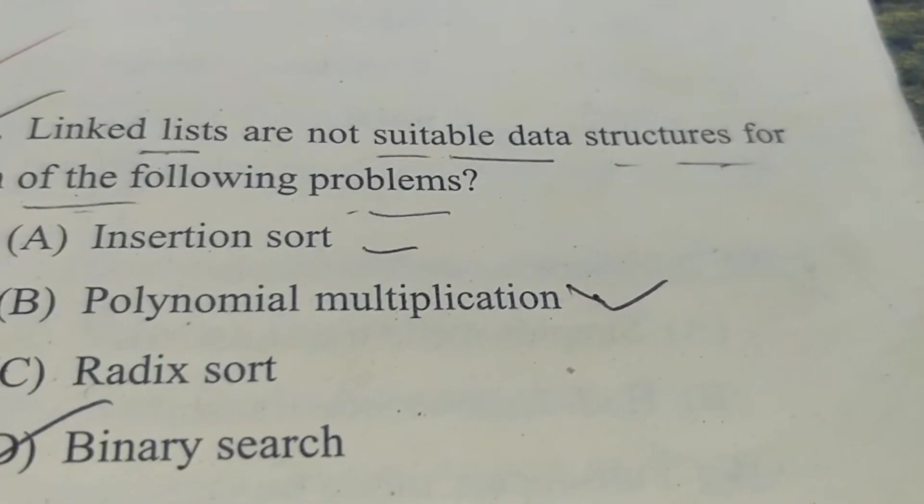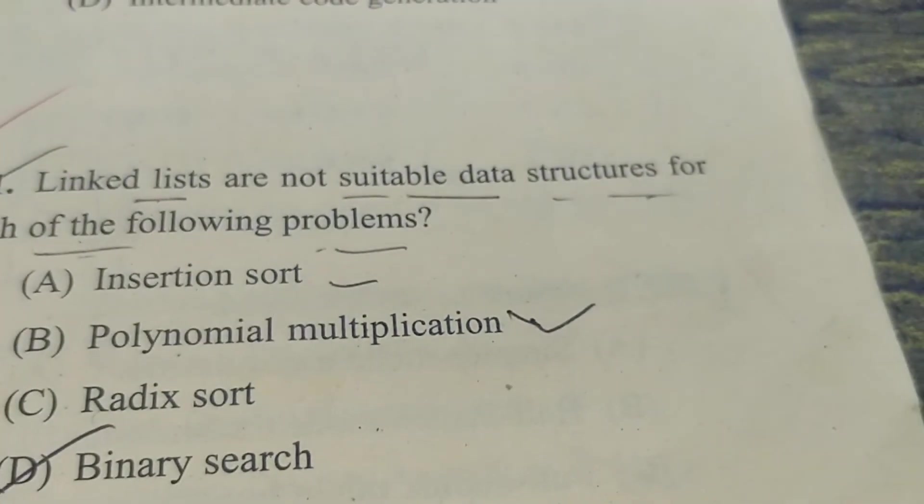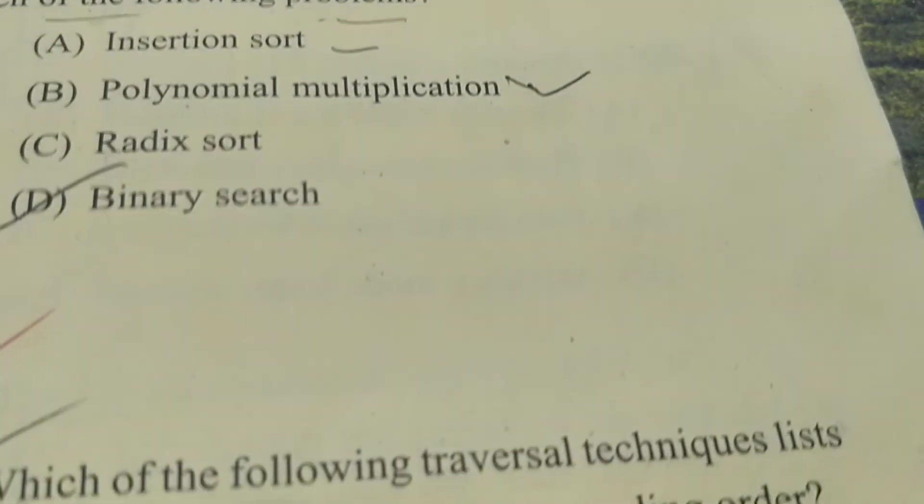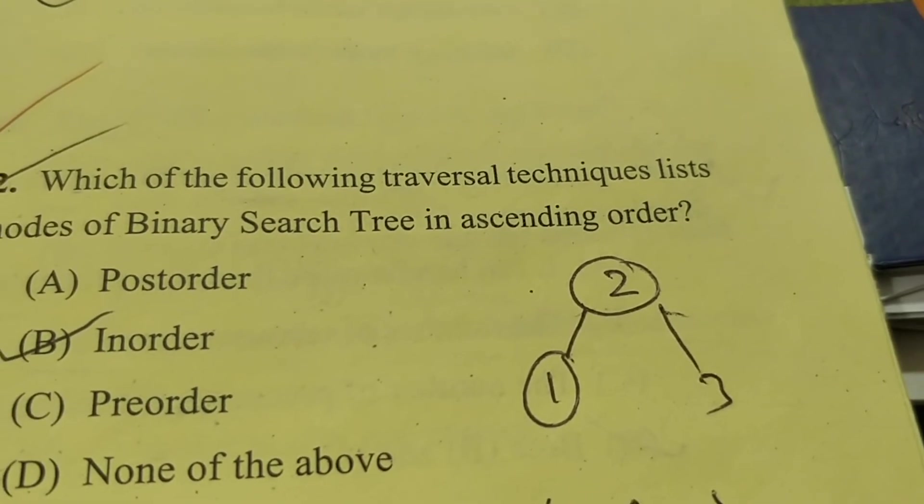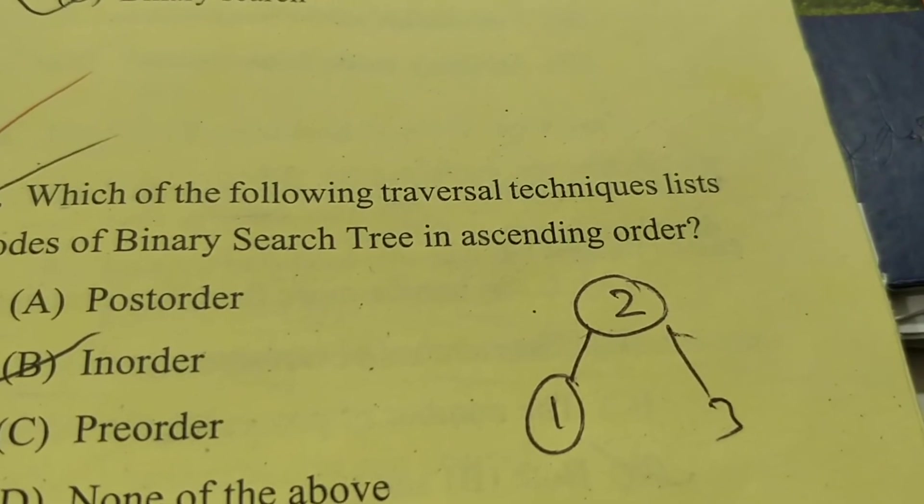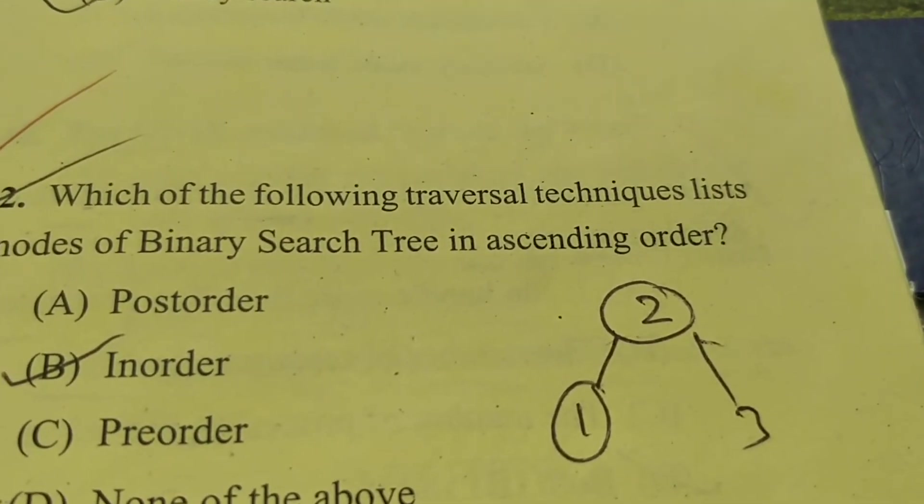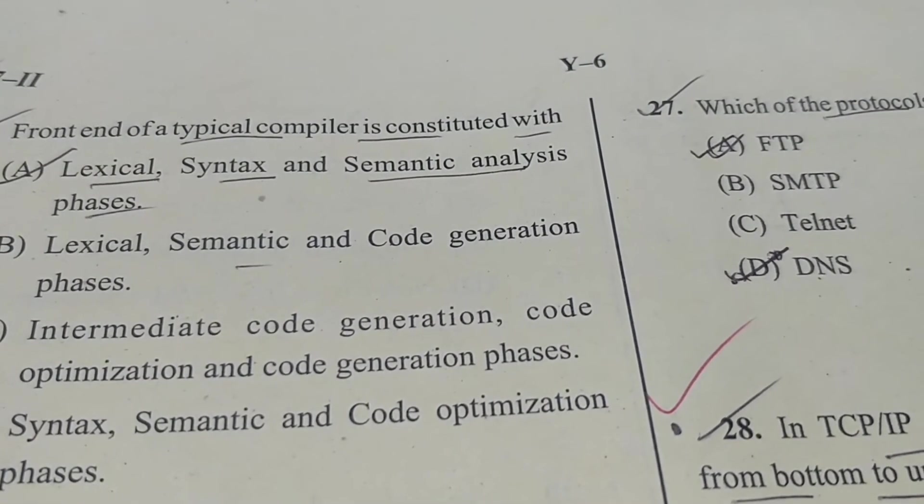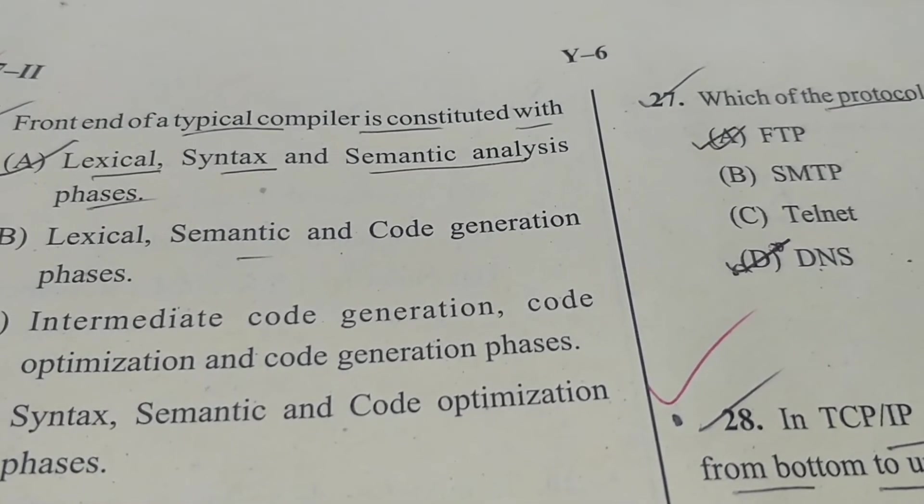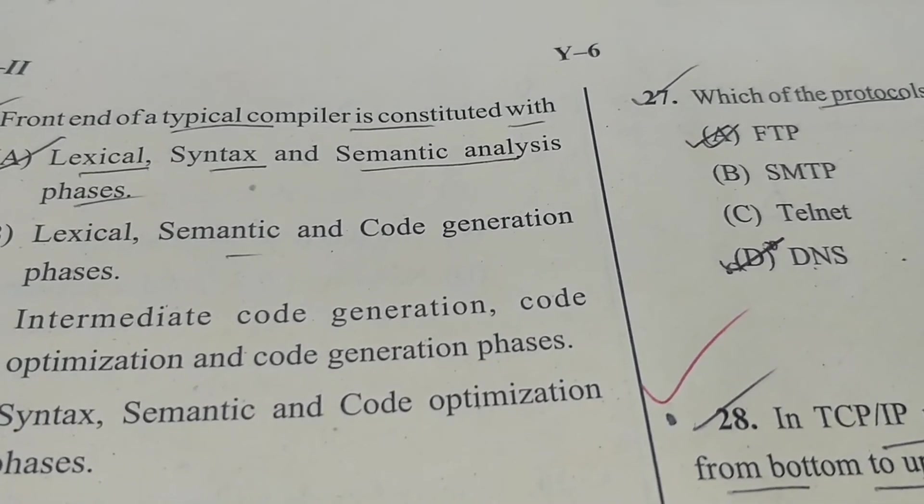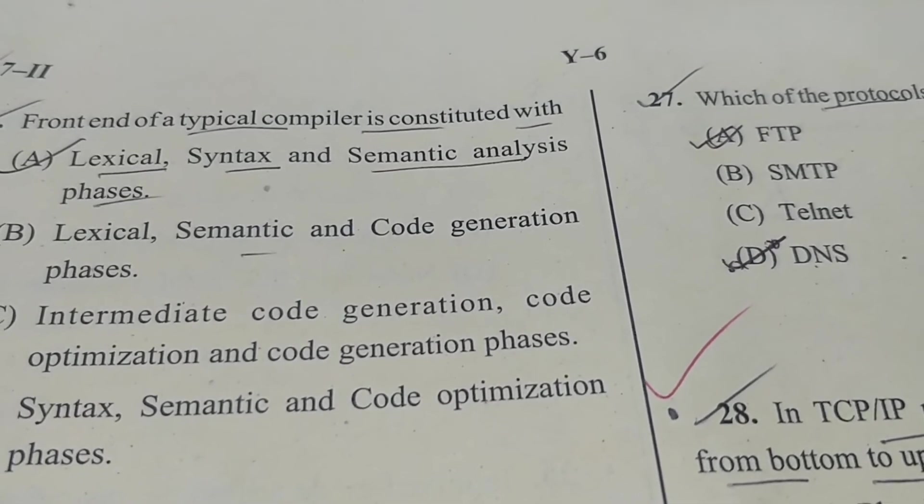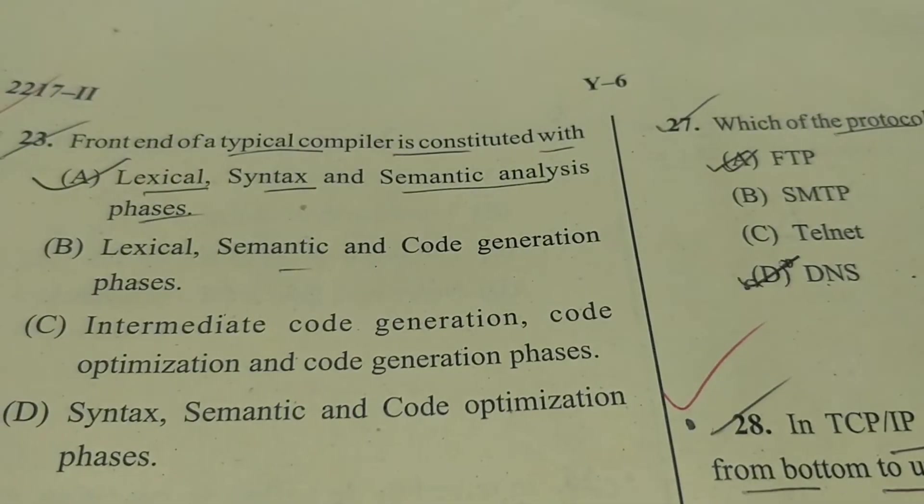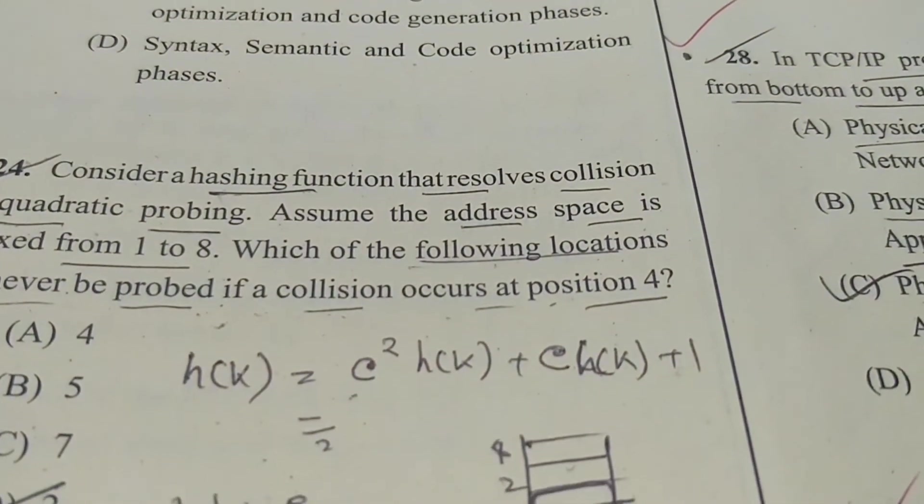Now question 21: linked lists are not suitable data structure for which of the following problems? Insertion sort, polynomial multiplication, radix, or binary search. The answer is binary search. D is the correct answer. Now the next question, that is 22: which one of the following traversal techniques lists the nodes of binary search tree in ascending order? Post-order, in-order, pre-order. In-order is correct. So B is the correct answer of question number 22. Now the 23: front-end of a typical compiler is constituted with lexical, syntax, and semantic analysis phases. So A is the correct answer. Lexical, semantic, and code generation phase - option B is not correct. Intermediate code generation, code optimization, and code generation phases are the back end. So A is the correct answer.